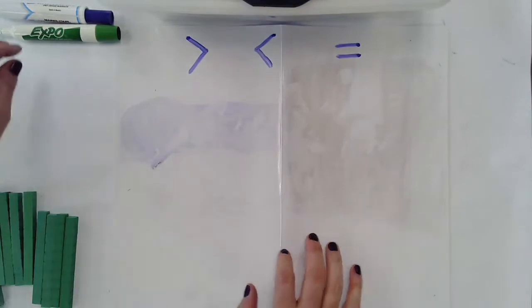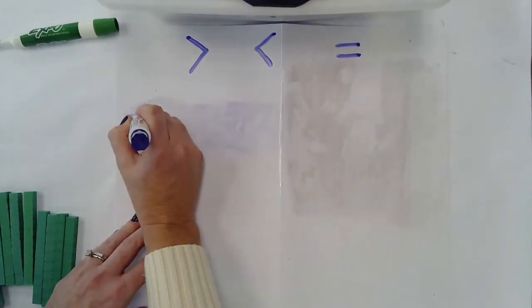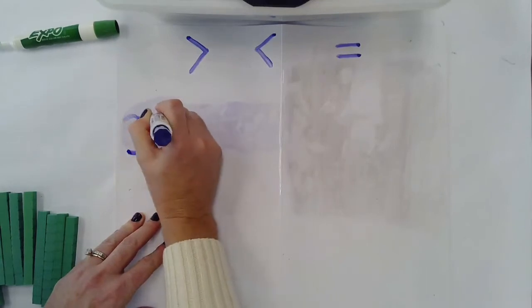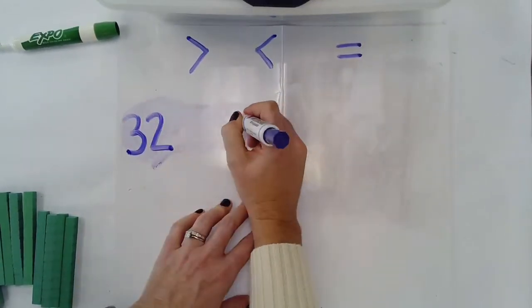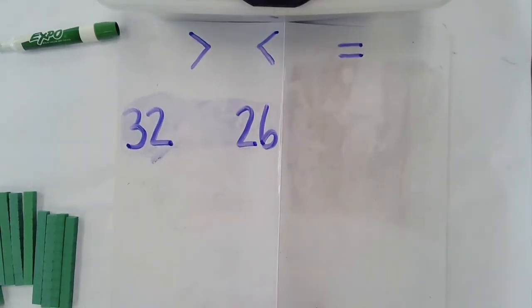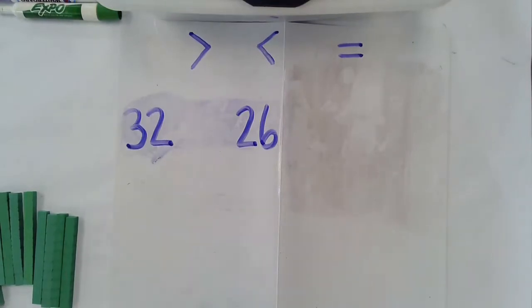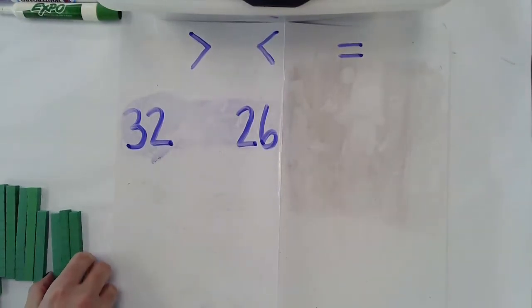So let's go ahead and take a look at some numbers here. So our first numbers that we're going to compare is 32 and 26. So if we're kind of confused by these numbers as to which one is greater or which one is bigger, we're going to use some place value blocks.